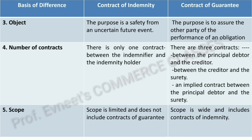The three contracts in a Contract of Guarantee are: first, between the principal debtor and creditor (since the principal debtor borrowed from the creditor); second, between the creditor and surety (where the surety guarantees that if the principal debtor does not pay, the surety will pay in their place); and third, an implied contract between the principal debtor and surety — because if the surety pays on behalf of the principal debtor, the surety will later recover those funds from the principal debtor. Fifth — scope: the scope of Contract of Indemnity is limited and does not include Contract of Guarantee.